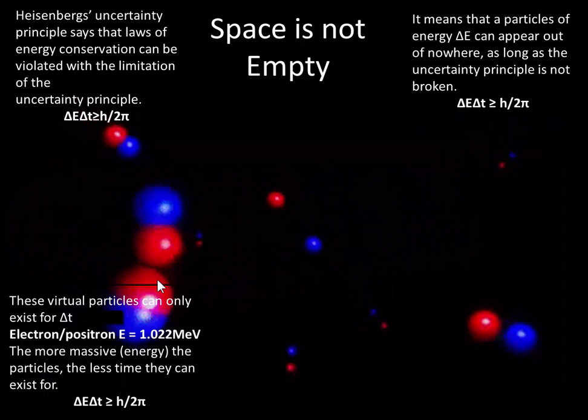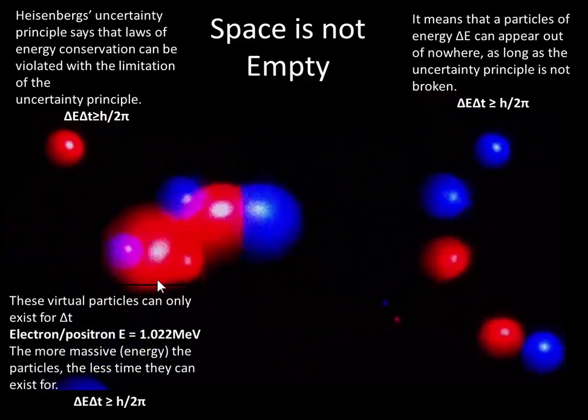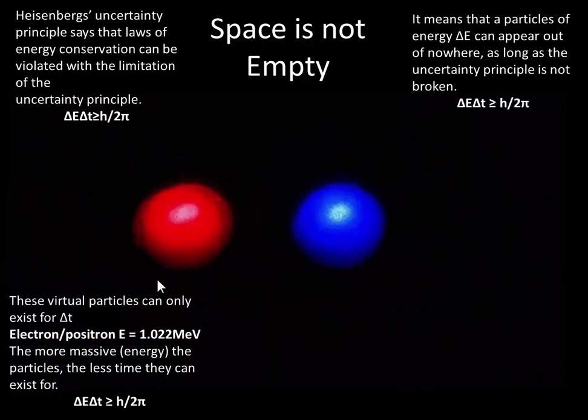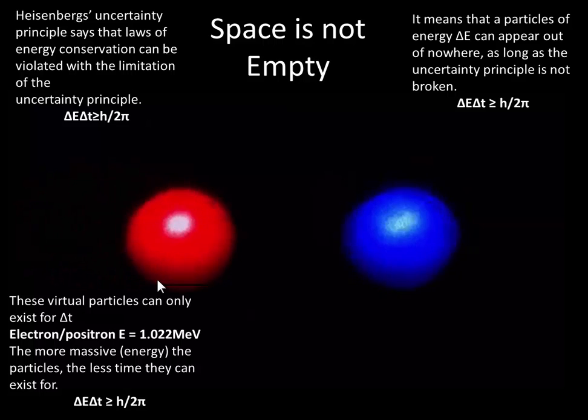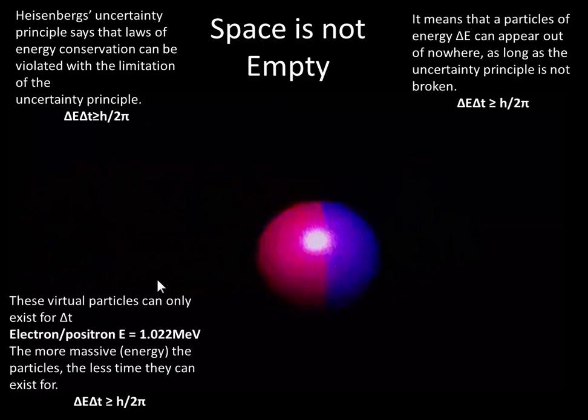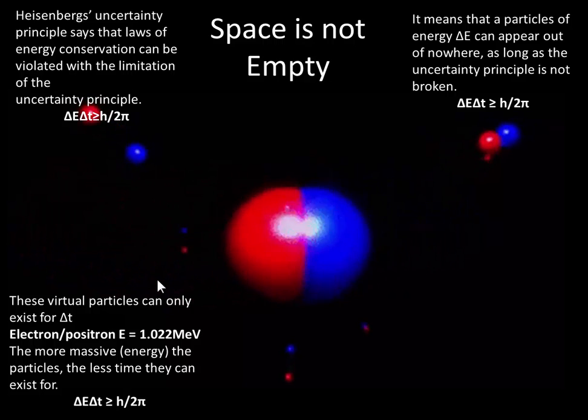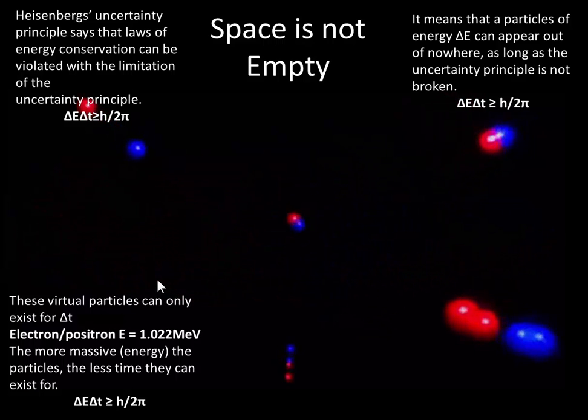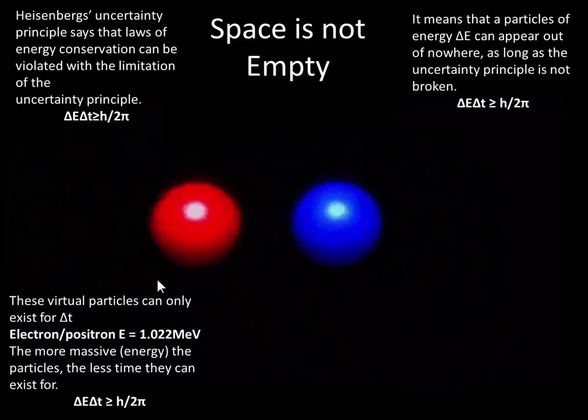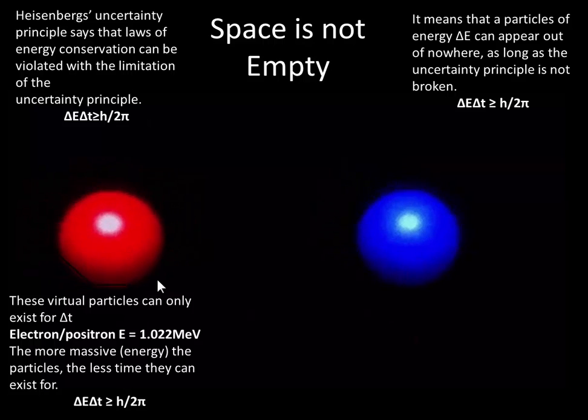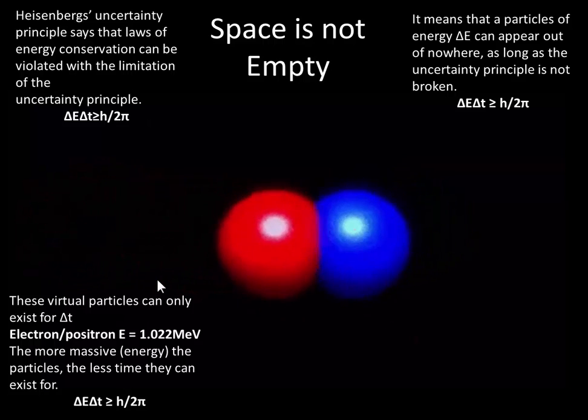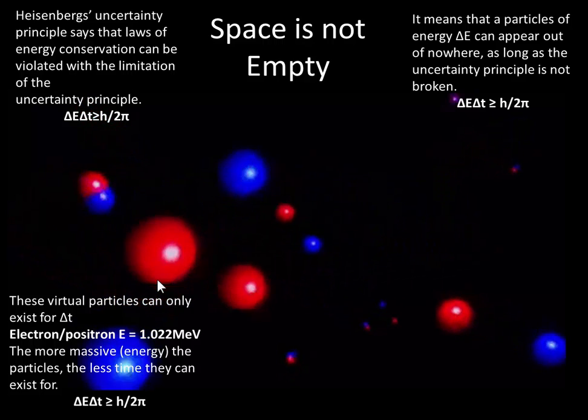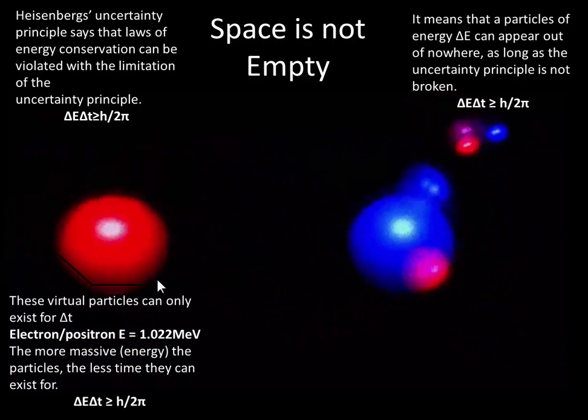These virtual particles, they're virtual because we can't observe them, can only exist for a time of delta T. For example, an electron or positron has an electron energy of 1.022 MeV. So let's try to find out the time that that can exist for. Basically, delta E times delta T is equal to H divided by 2 pi. What would be the kind of order of magnitude of the time that this energy is able to be created for before it disappears?